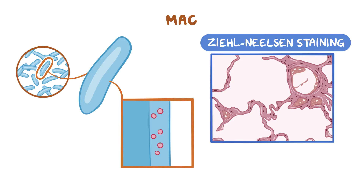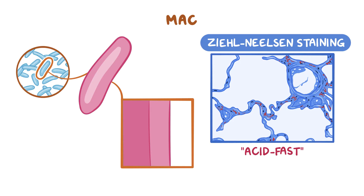The stain binds to the mycolic acid in the mycobacterial cell wall, and after staining, an acidic decolorizing solution is applied which removes the red dye from the background cells, tissue fibers, and any organisms in the smear except mycobacteria, which retain the dye. This is why they're called acid-fast, and they appear bright red on a blue background.